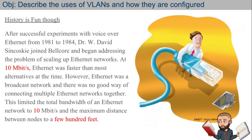Here's a fun historical story. After successful experiments with VoIP over ethernet in 1984, Dr. W. David Sinkowski joined Bellcore and began addressing the problem of scaling up ethernet networks. At 10 megabits per second, ethernet was faster than most alternatives at the time. However, ethernet was a broadcast network with no good way of connecting multiple ethernet networks together, limiting total bandwidth to 10 megabits. Ethernet also had a physical limitation between nodes of only a few hundred feet.